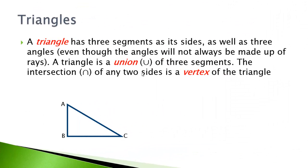Last but not least, triangles. A triangle has three segments as its sides as well as three angles, even though the angles will not always be made up of rays because a triangle is made up of three segments. A triangle is a union of all three of the segments, and the intersections of any two sides is the vertex of the triangle. Remember that vertex is the point where the two sides of the angle extend from.